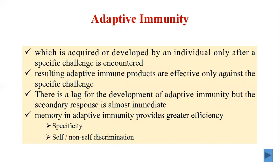The next type is adaptive immunity — the acquired, developed form of immunity that an individual develops only after a specific challenge is encountered. If the individual has been infected with a particular disease, it will develop antibodies. The second time the pathogen returns, the adaptive immune products are effective against that specific challenge. There is a lag for the development of adaptive immunity, but the secondary response is almost immediate — the primary response is delayed, but the secondary response is rapid.